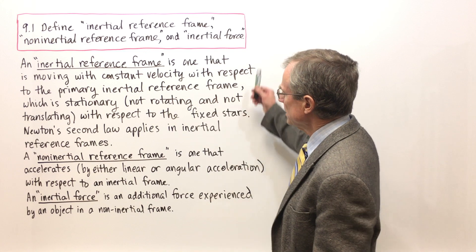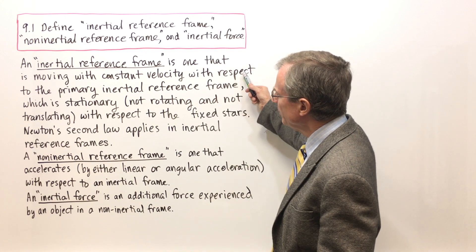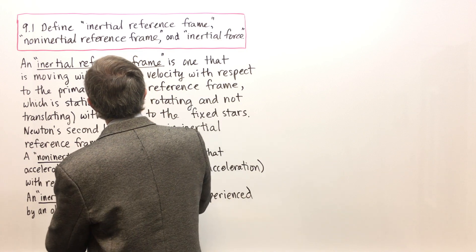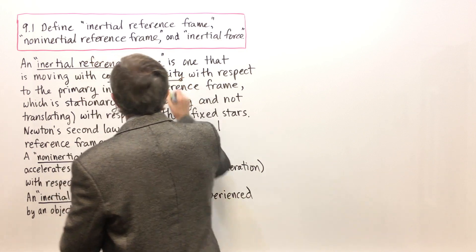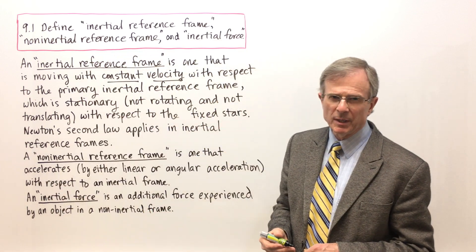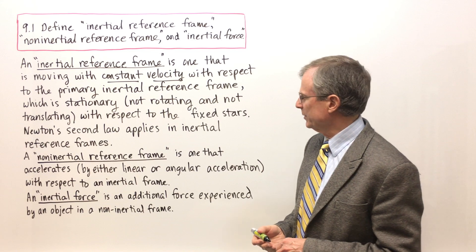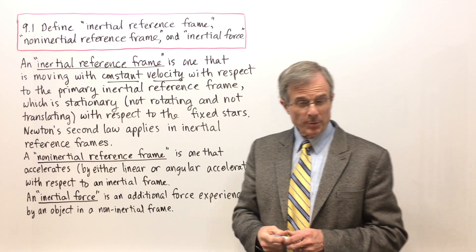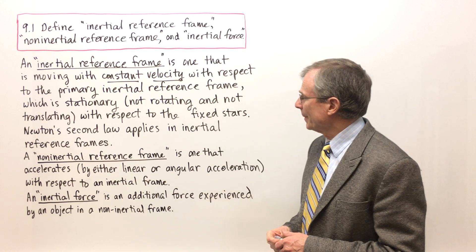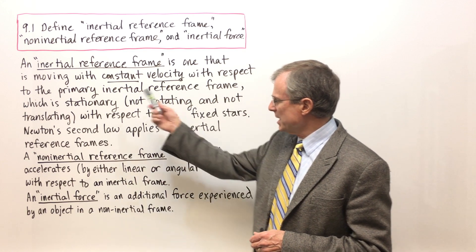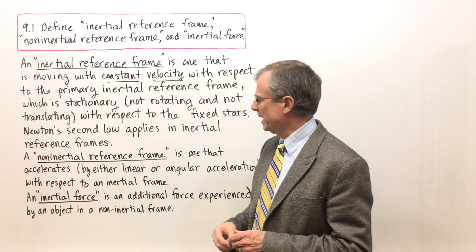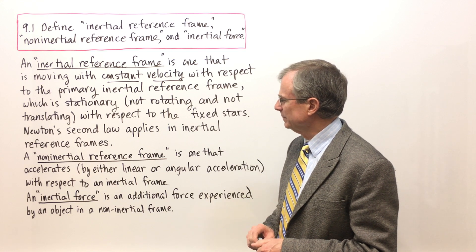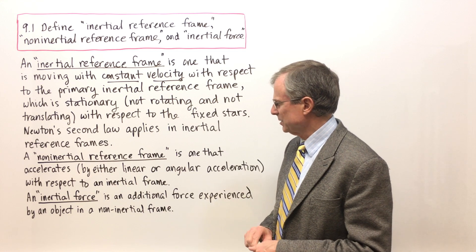So, definitions. An inertial reference frame is one that is moving with constant velocity with respect to the primary inertial reference frame. And what is the primary inertial reference frame? That is one that is either stationary — not moving, not rotating, and not translating with respect to the fixed stars.